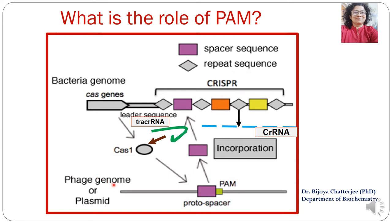If the viral attack is successful, the phage genome will get inside the bacterial cell. The phage genome consists of two regions: the protospacer region and the PAM region.